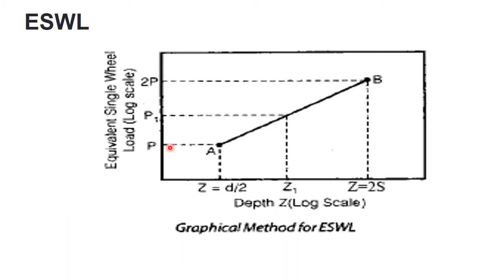Similarly, point B should be located using two coordinates: 2P and 2S. Once we locate point A and point B, we need to join point A and B by a straight line.